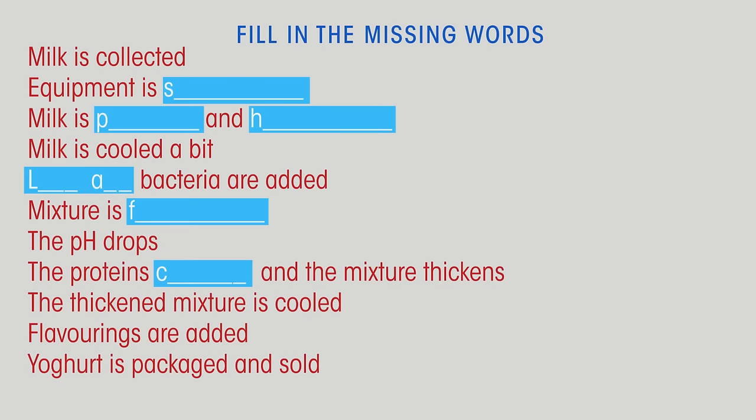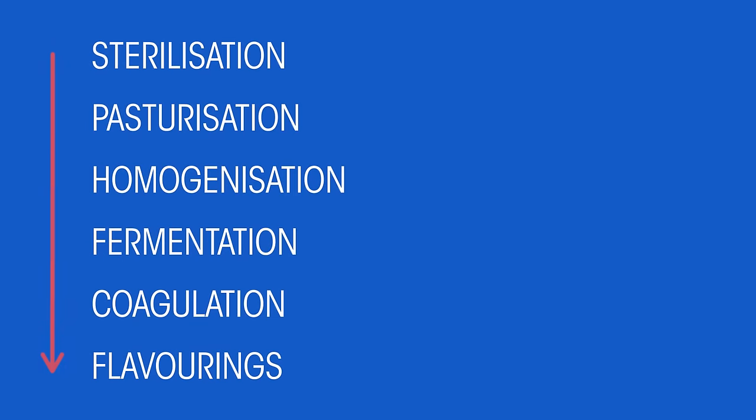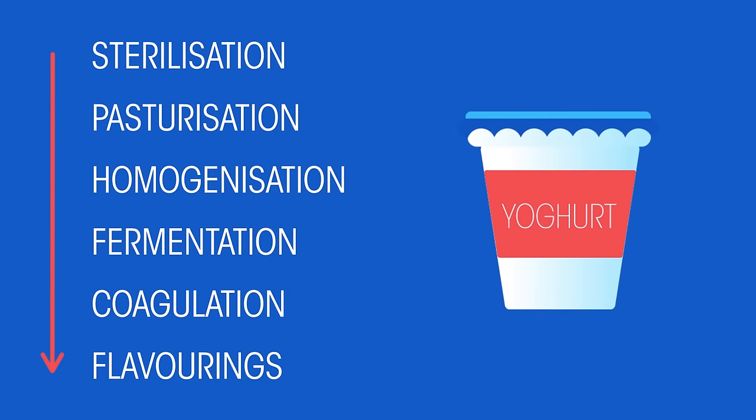Now what about completing the missing words? Again, pause the video and work them out. Did you get them right? So there we have the process of yogurt making, from milk to a tasty strawberry-flavored yogurt.